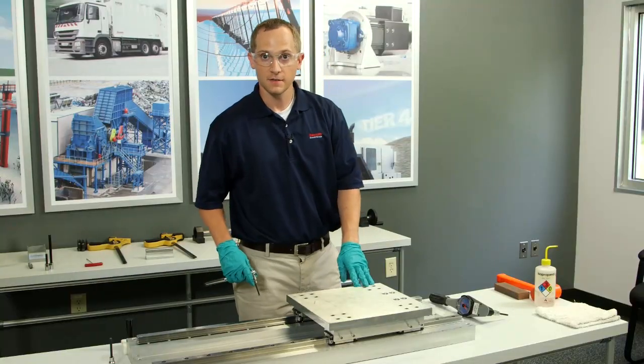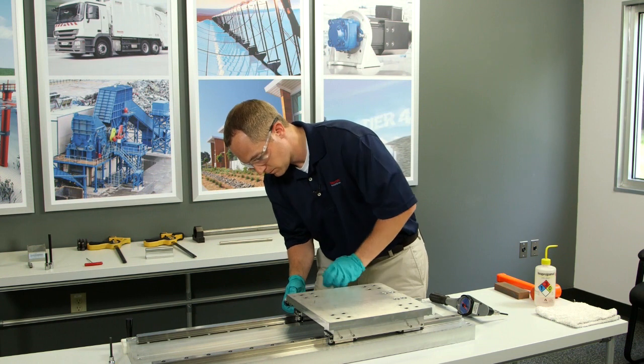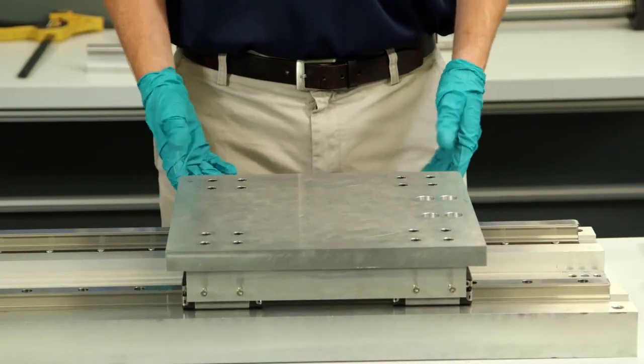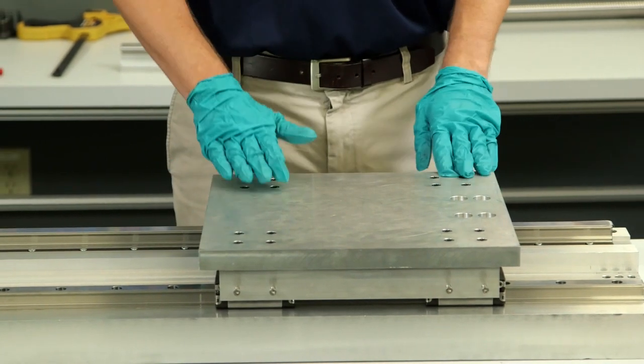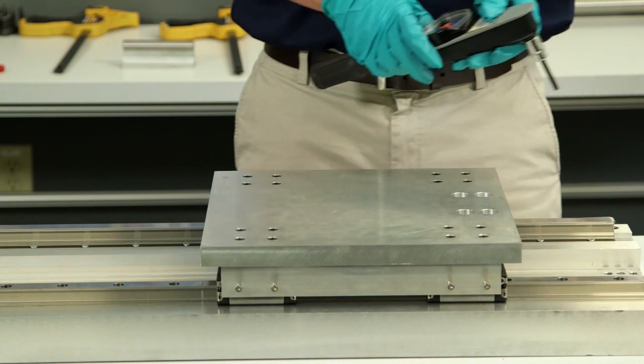Now I'm going to finish tightening the set screws on the side of the reference rail. Now that I've finished tightening my set screws, now it's time to tighten the top in a star pattern to the specified torque.